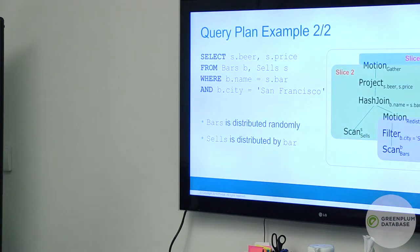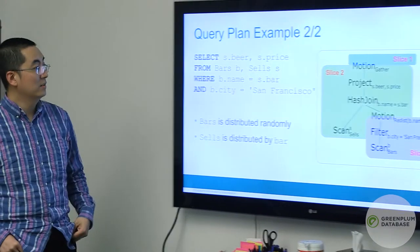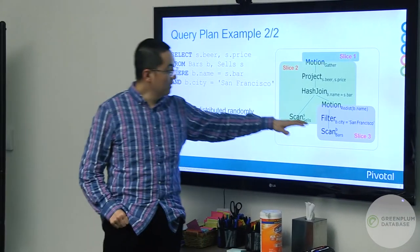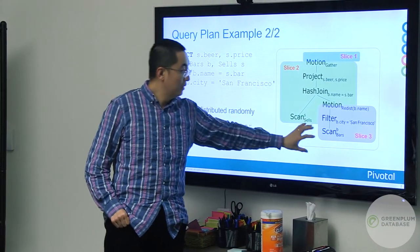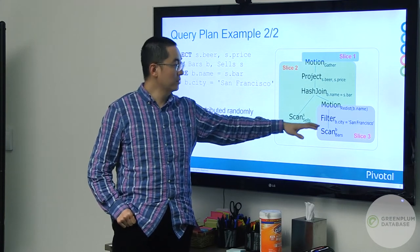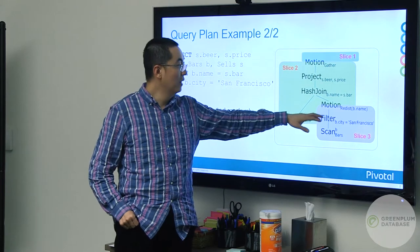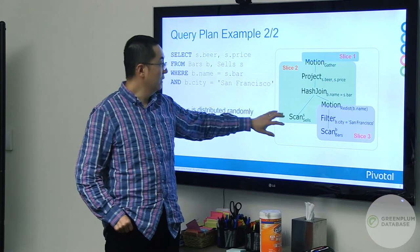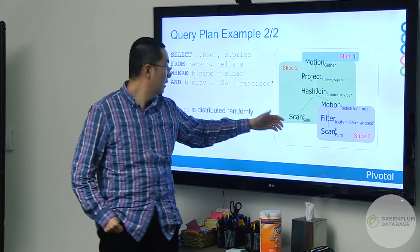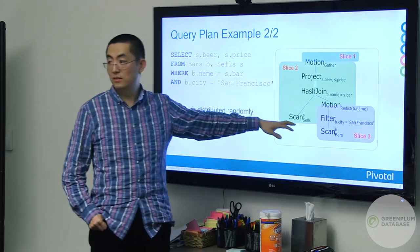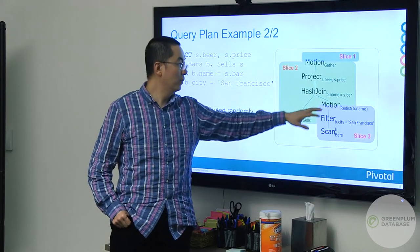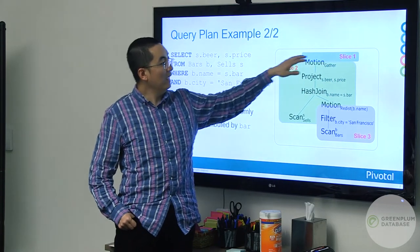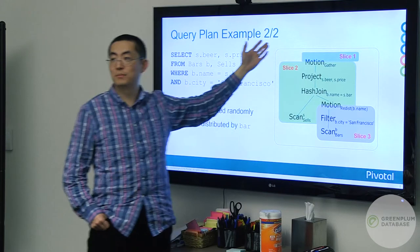When this query is running inside a GreenPlum cluster, it's actually broken down into multiple slices. From the bottom up: slice three looks through all the bars, filters out the city which is San Francisco, and redistributes data on the join column — the name. Slice two runs in parallel, scans all the cells, does a hash join with the redistributed bars result, and projects it. At the end, on the master, we collect the data and return it to the user.